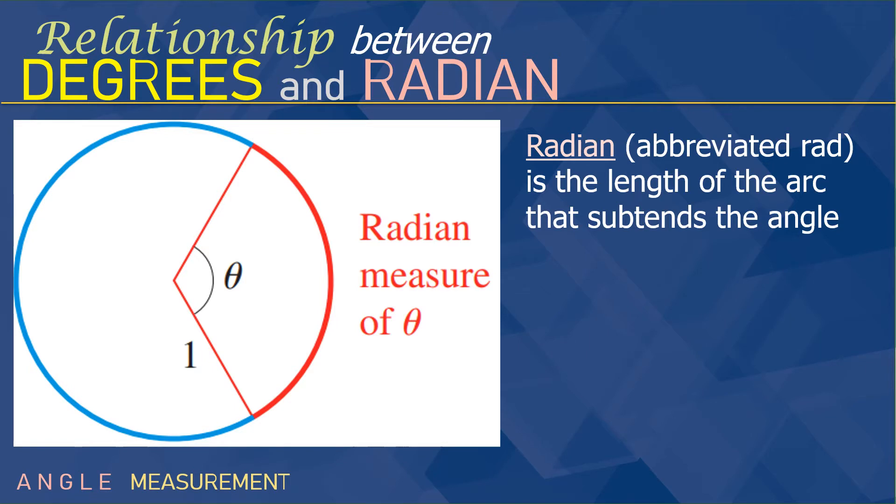So, we won't just talk about 30 degrees, 50 seconds, like that. We also talk about pi over 4, pi over 3. And these are radian measurements in trigonometry. We've got to know more about this. So, radian is abbreviated RAD or rad, and it is the length of the arc that subtends the angle.